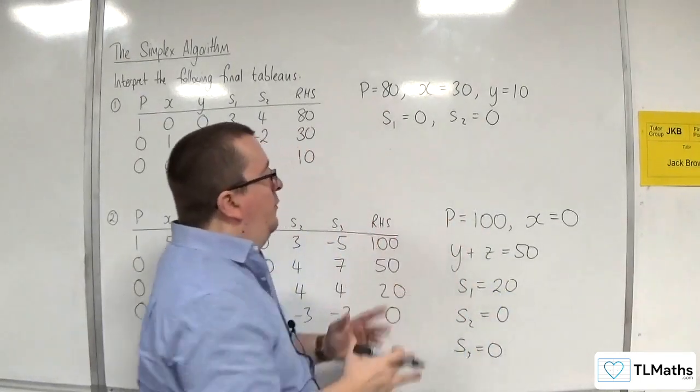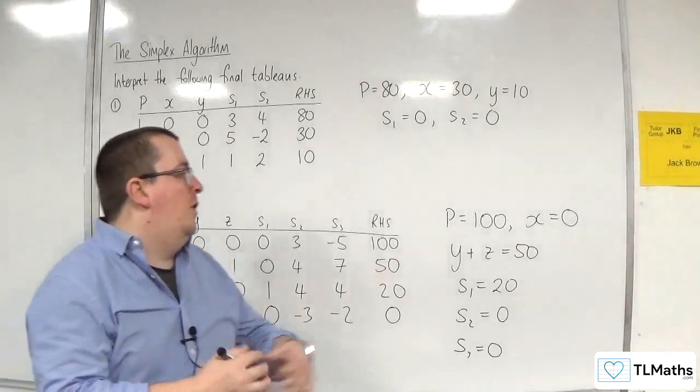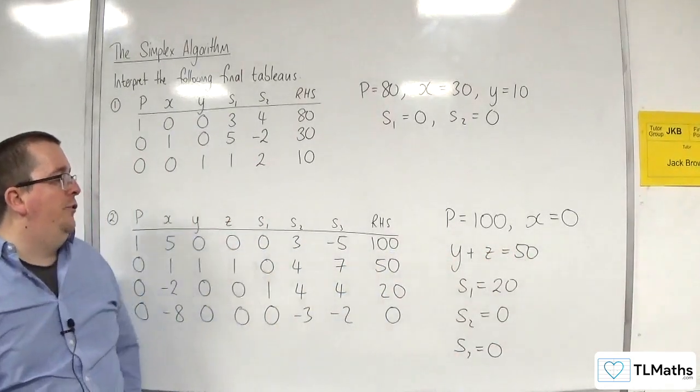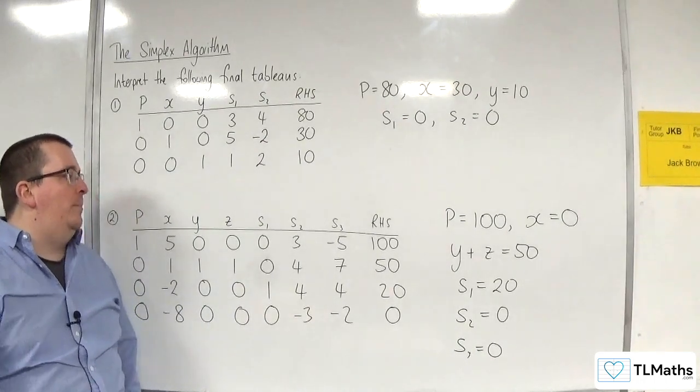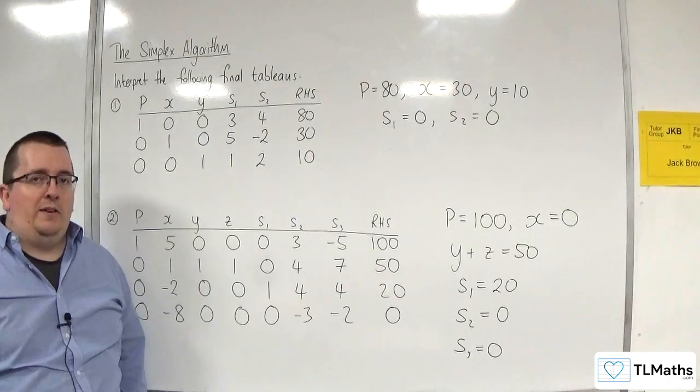So you've got this quite strange situation occurring here, where Y plus Z is going to be equal to 50. And as I said, that's quite a rare occurrence, but that is something that can happen with a simplex tableau.